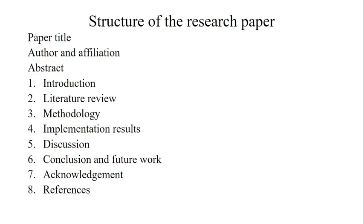Now we will see the structure of a research paper. The structure starts with the paper title, then author and affiliation, abstract and introduction, literature review, methodology, implementation results, discussion, conclusion, future work, acknowledgement, and ends with references.